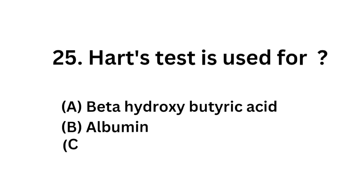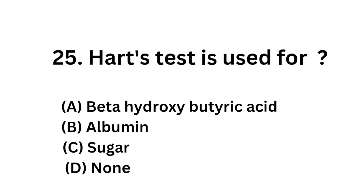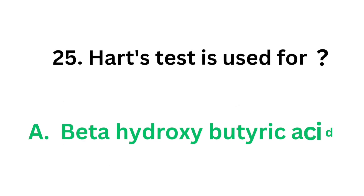Question number 25: Hart's test is used for? Option A: Beta-hydroxybutyric acid. Option B: Albumin. Option C: Sugar. Option D: None. The correct answer is Option A: Beta-hydroxybutyric acid. Hart's test is used for beta-hydroxybutyric acid, which is a ketone body.